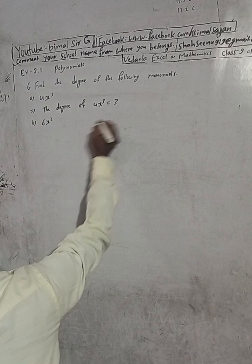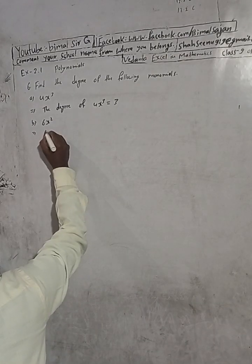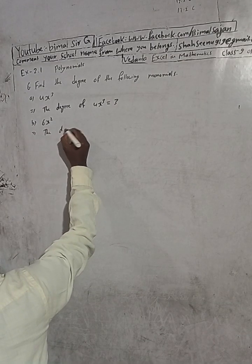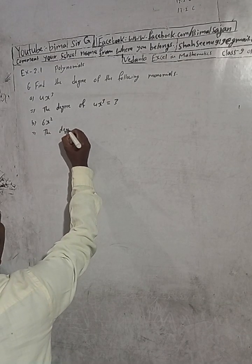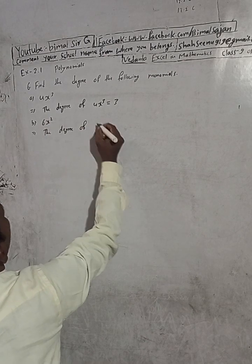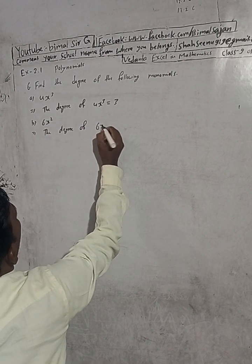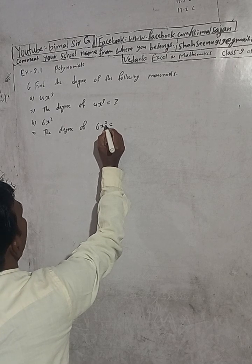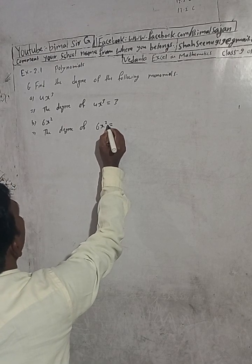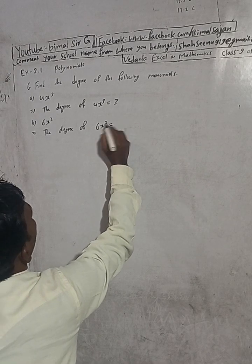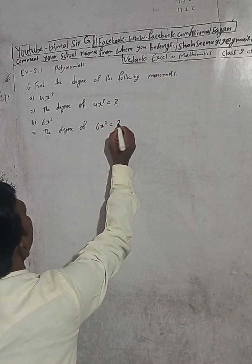In the same way, question 6(b): the degree of 6x squared. Here the highest power is 2. So 2 is the degree.